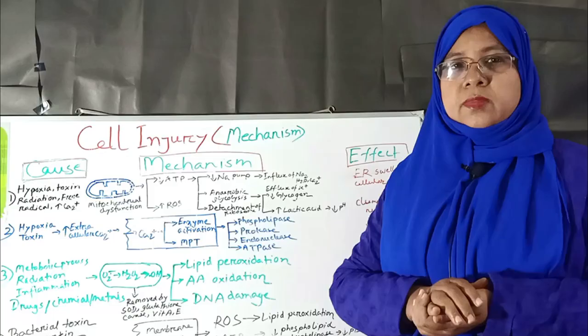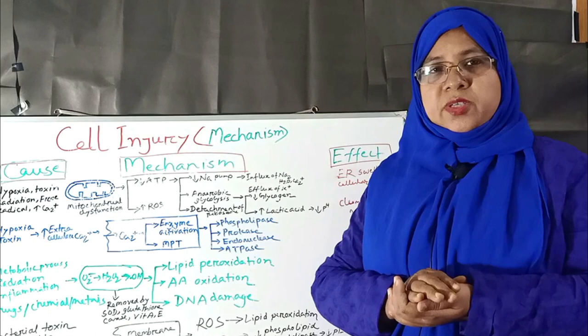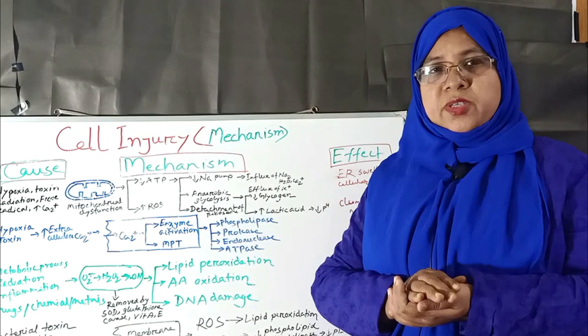In summary, the biochemical mechanisms of cell injury include ATP depletion, mitochondrial dysfunction, loss of membrane permeability, production of free radicals, membrane damage, and DNA damage. In my next class, I will discuss about histomorphological patterns of reversible and irreversible cell injury. Thanks for watching.